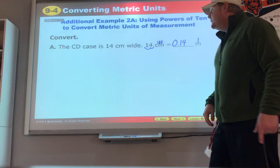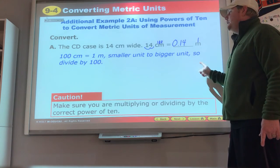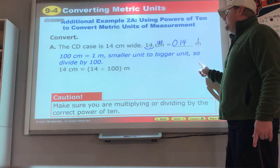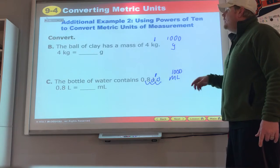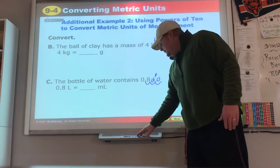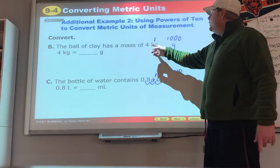We can look and see what they do. Smaller to bigger, we divide. We move that decimal two places and get that item.